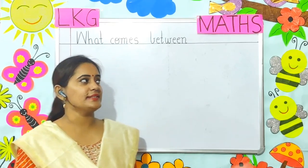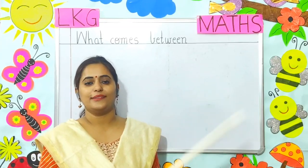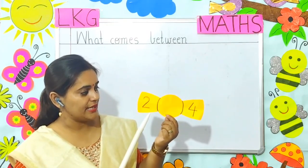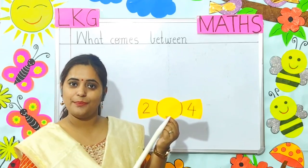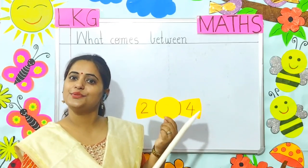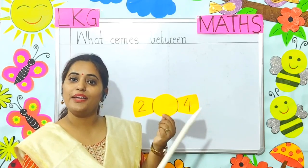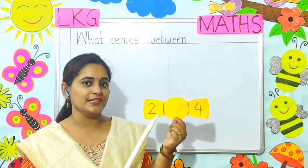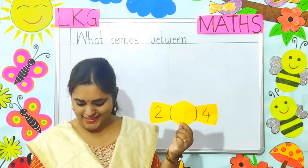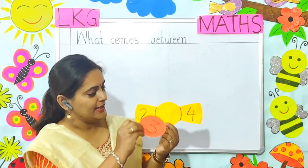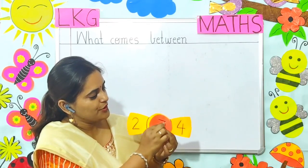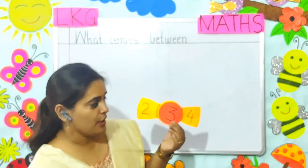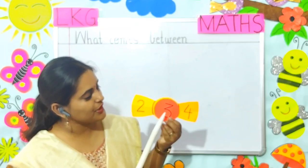Children, our next topic is what comes between. So here, two numbers will be given to you, and you have to write the number that comes in between these two numbers — that is, in the middle. So here the numbers given are 2 and 4. When you count after 2, what number comes? 2, then 3. Yes, so here the number 3 will come. So 3 comes in between 2 and 4, making it 2, 3, 4.